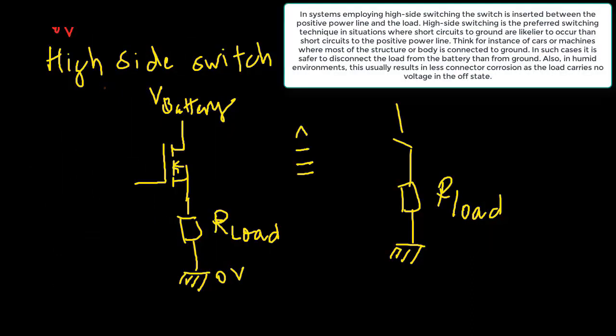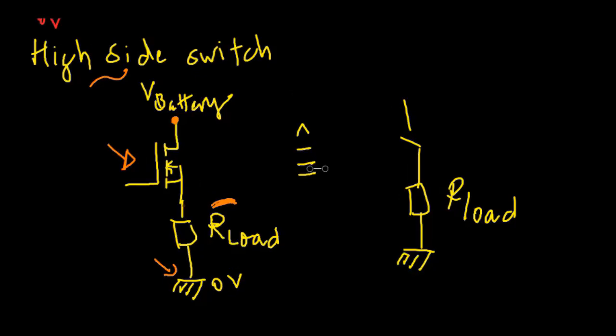Systems employing high-side switching: the switch is inserted between the positive power line and the load. High-side switching is the preferred switching technique in situations where short circuits to ground are likelier to occur than short circuits to the positive power line. Think for instance of cars or machines where most of the structure or body is connected to ground. In such cases, it is safer to disconnect the load from the battery than from ground. Also in humid environments, this usually results in less connector corrosion as the load carries no voltage in the off state.